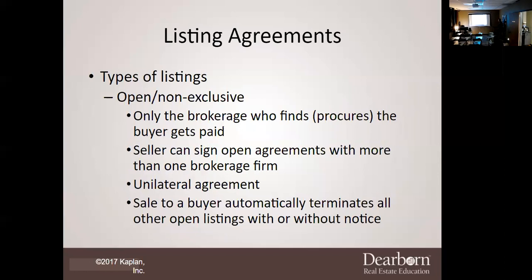There's one other listing type not listed on the slide that they do test on — the net listing. In Texas, a net listing is not legal unless it is properly presented. Here's what a net listing is: Ms. Linda wants to sell her house, gets on Zillow's Z Estimate, and it says her house is worth $200,000. Now, Z Estimates are 100% incorrect — they are working on getting them right, but the formula is not correct at all.